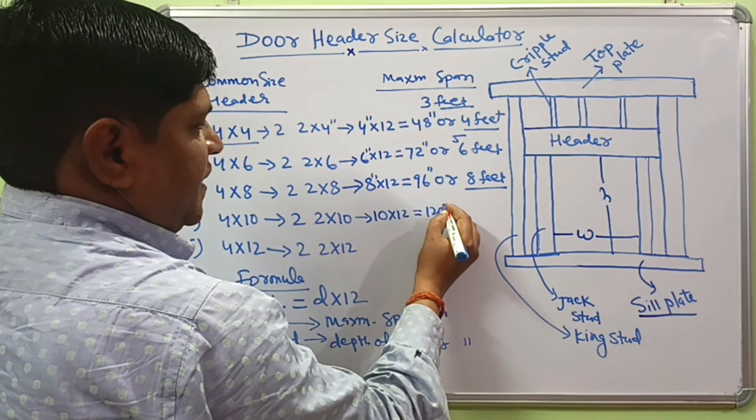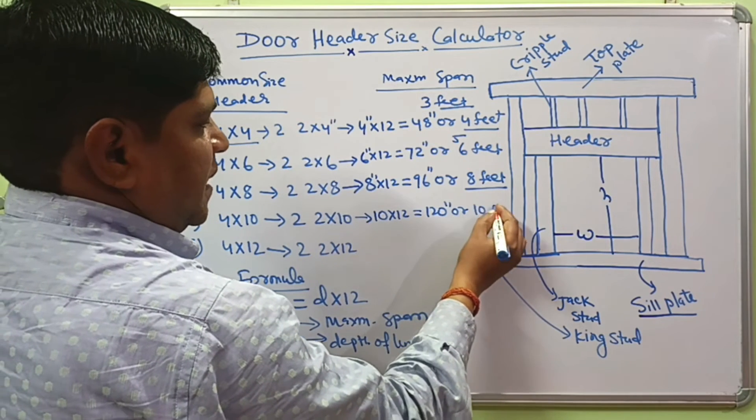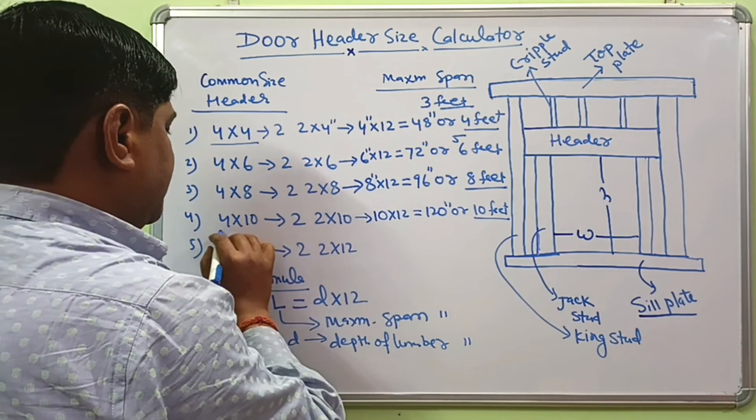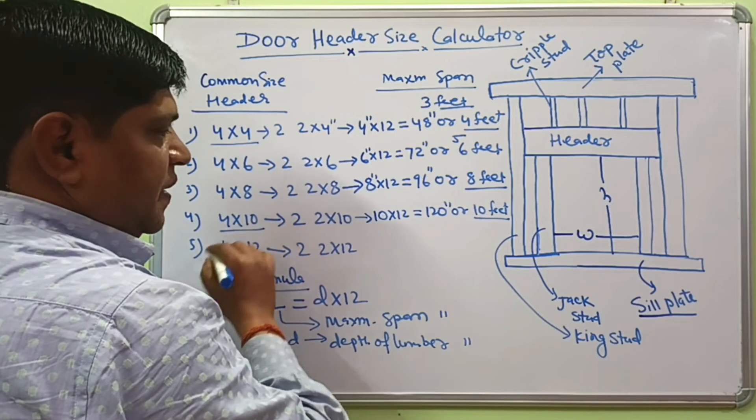And 10 times 12. This will come 120 inches or 10 feet. If your span is 10 feet, then you should use 4 by 10 header.